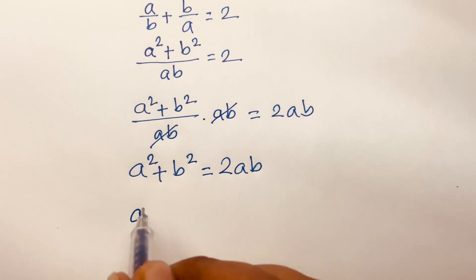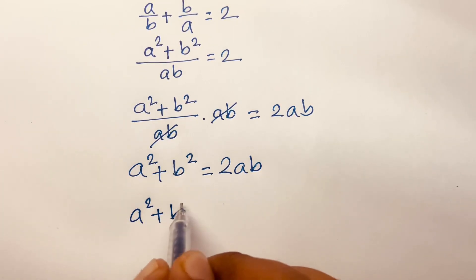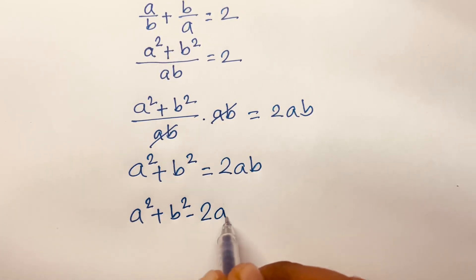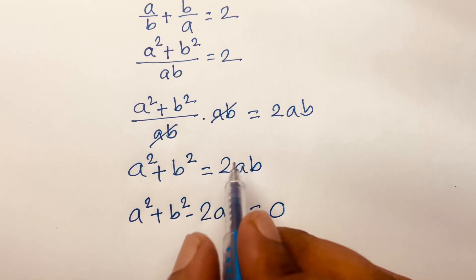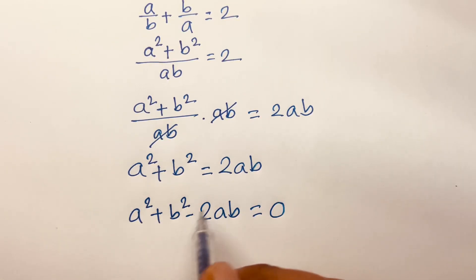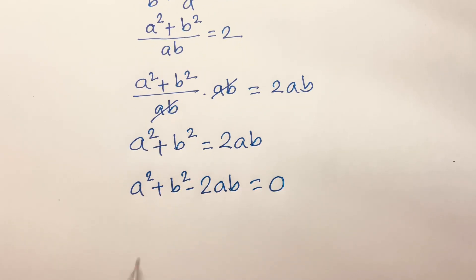Then I can see a² + b² - 2ab = 0. I just moved 2ab to the left side. Now we know that a² - 2ab + b²